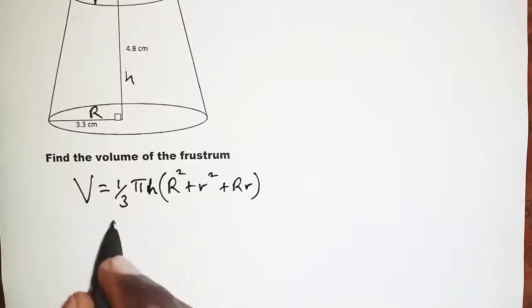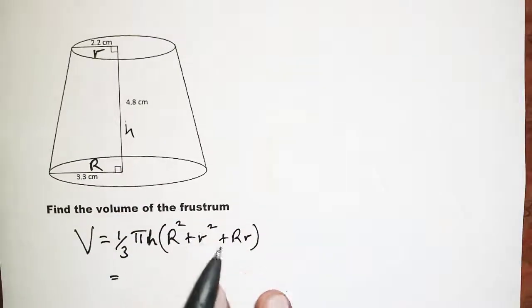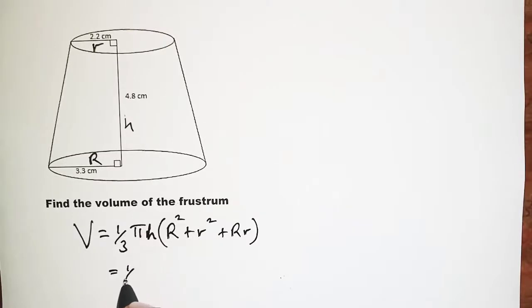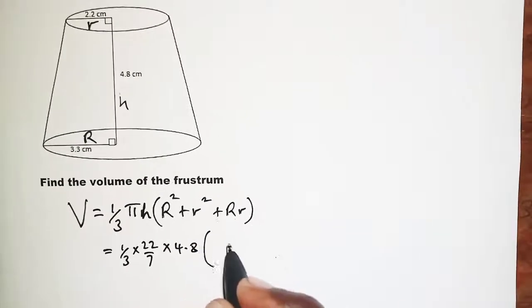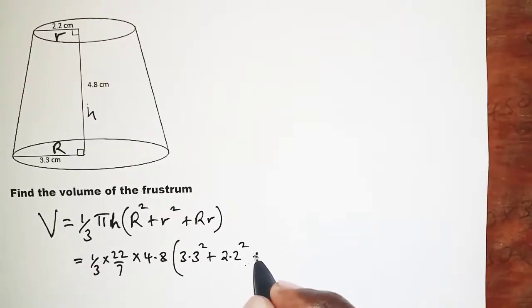We're going to have the values in the diagram substituted into the formula. We have one-third times 22 over 7 times the height which is 4.8, into the radius here. We have 3.3 squared plus 2.2 squared - the smaller radius and the bigger radius - plus the bigger radius times the smaller radius.